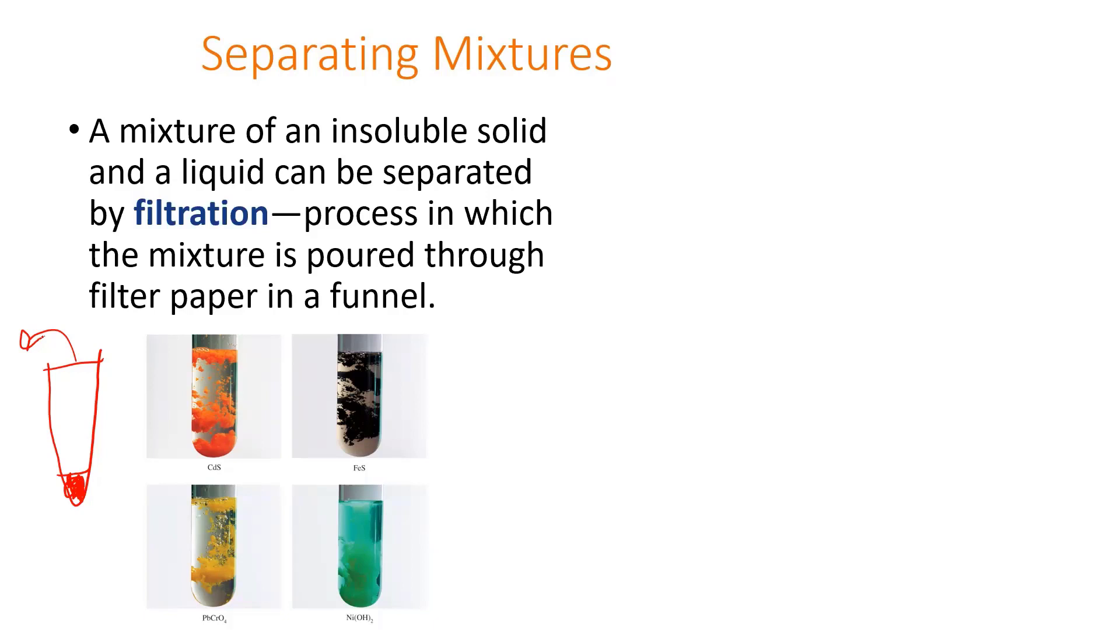That liquid on the top is referred to as your supernatant. So you can decant your supernatant and leave your precipitate at the bottom. Now a better way of doing that is actually to have it go through centrifugation and spin it on a centrifuge. Then that way that pellet is really solid and when you decant you won't get some of the solid pouring off.